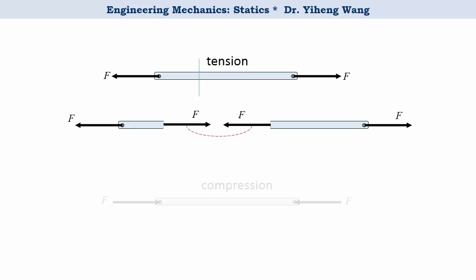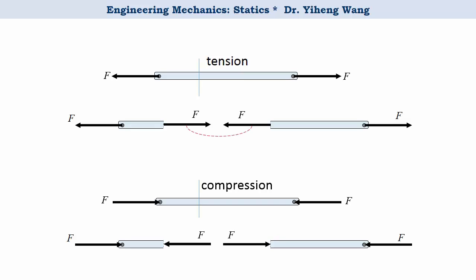Similarly, if the beam is under compression, you can also run an imaginary cut anywhere on the beam. And due to equilibrium requirement, the internal normal force is always compressive and is of the same magnitude F everywhere. This is the base for the method of sections that we will discuss in yet another video.